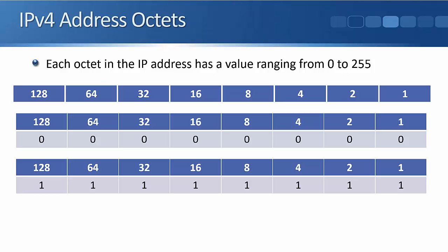If we put a 1 in on each of the bits, let's add these up: 128 plus 64 equals 192, 192 plus 32 equals 224, 224 plus 16 equals 240, 240 plus 8 is 248, 248 plus 4 is 252, 252 plus 2 is 254, and 254 plus 1 is 255.